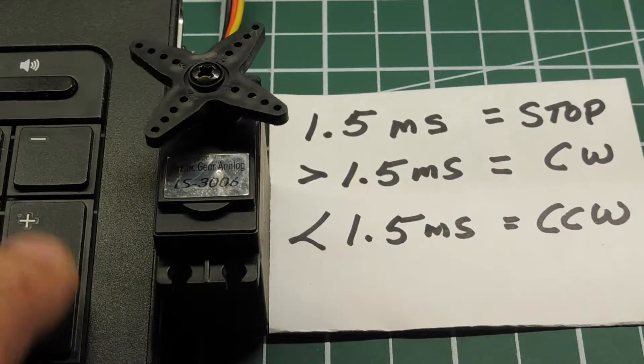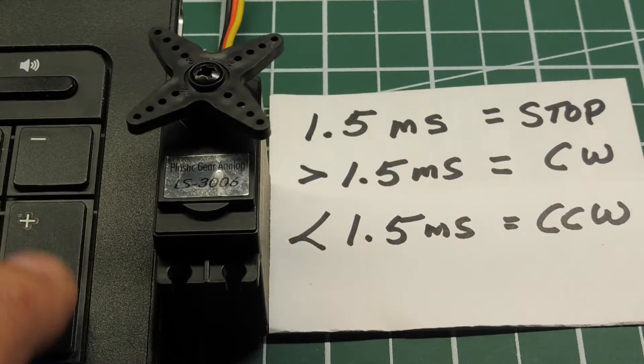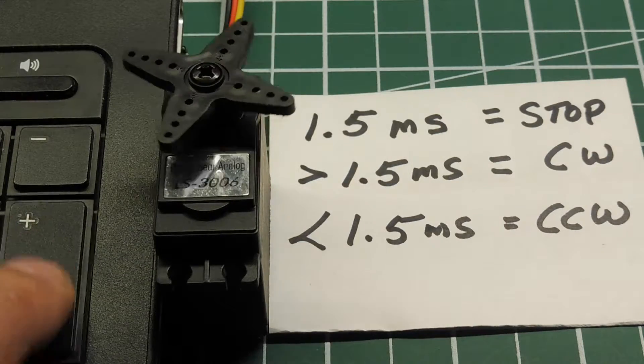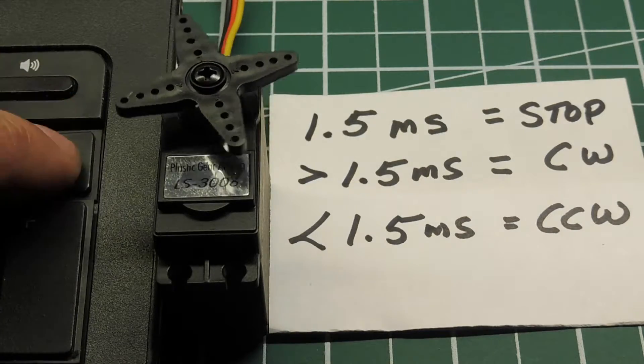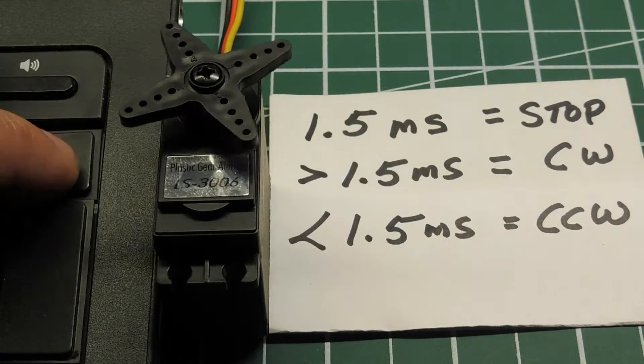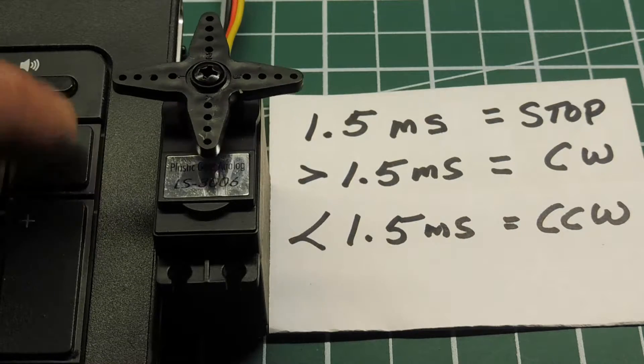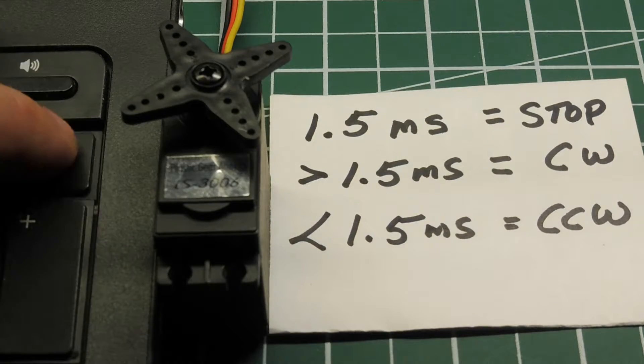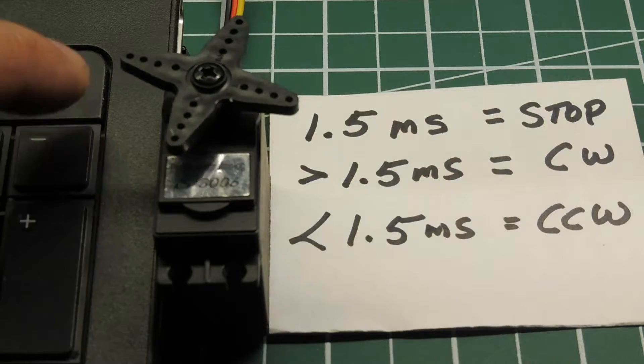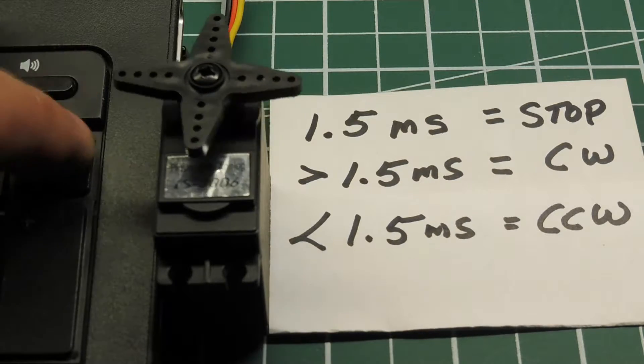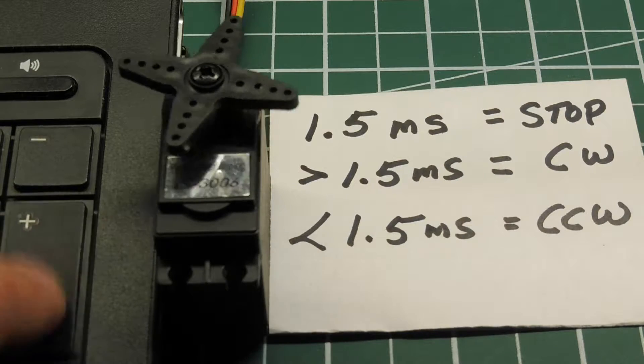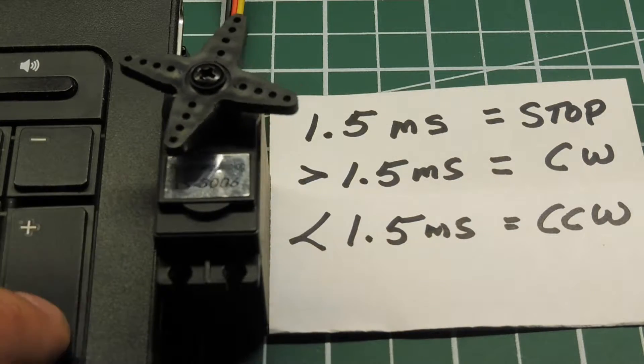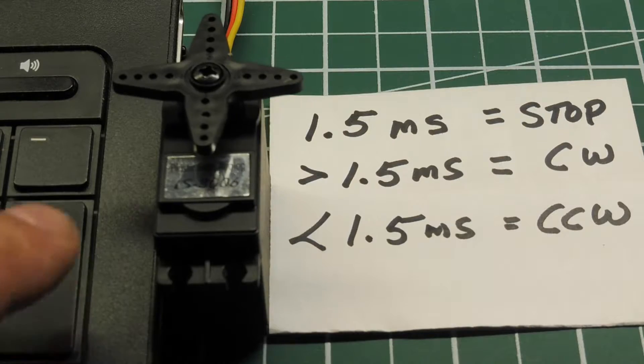So I'll start decreasing, and you can see it starting to move counterclockwise, and the further I go down, the faster it gets. So I'll bring it back up to the stop mode, and then increase it greater than one and a half milliseconds. There's our stop mode. Now we're going clockwise. So this little servo can be used to drive wheels of a little robot project.